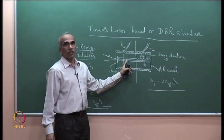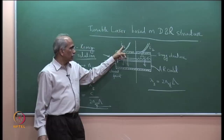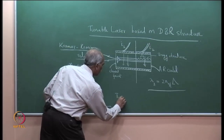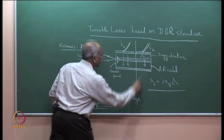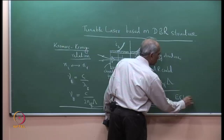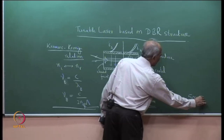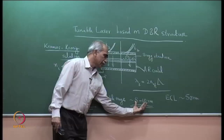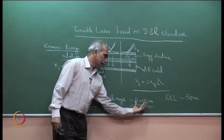The tunable range by changing the current is typically of the order of 5 to 10 nanometers. In the case of an external cavity laser (ECL), the tuning range is of the order of 50 nanometers — we cannot achieve that with a DBR tunable laser, but a range of 5–10 nm is achievable. This is a tunable laser based on the DBR structure.